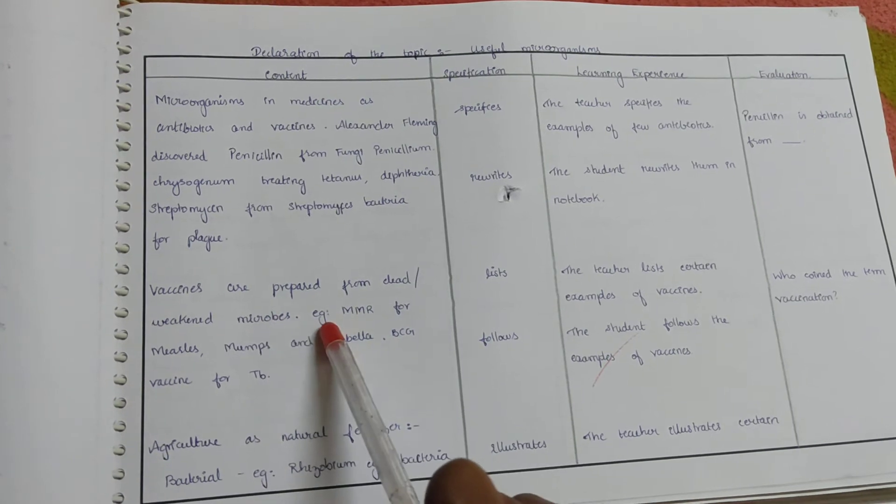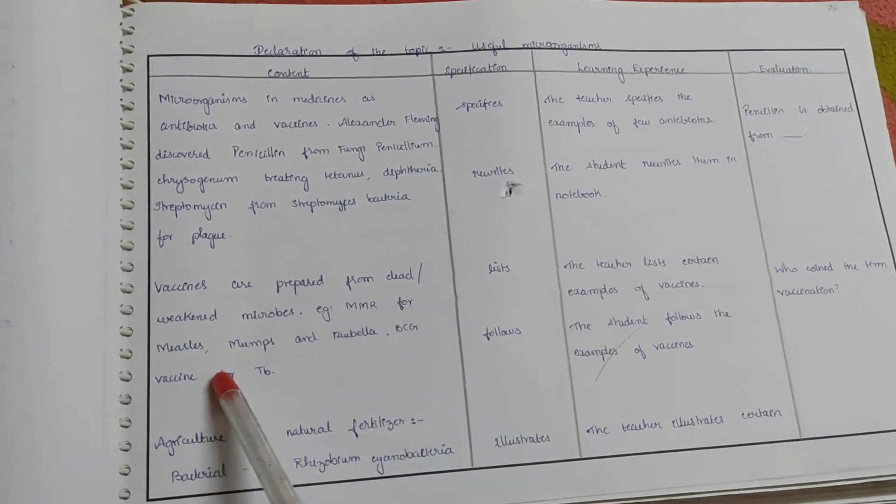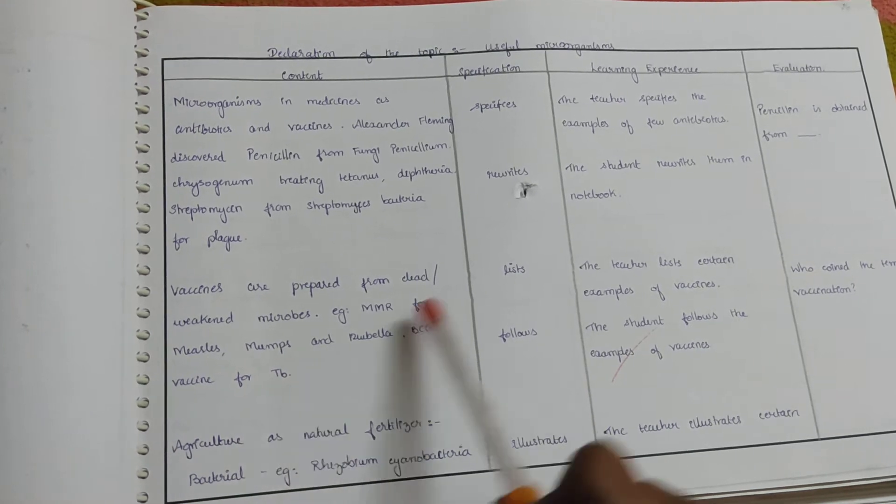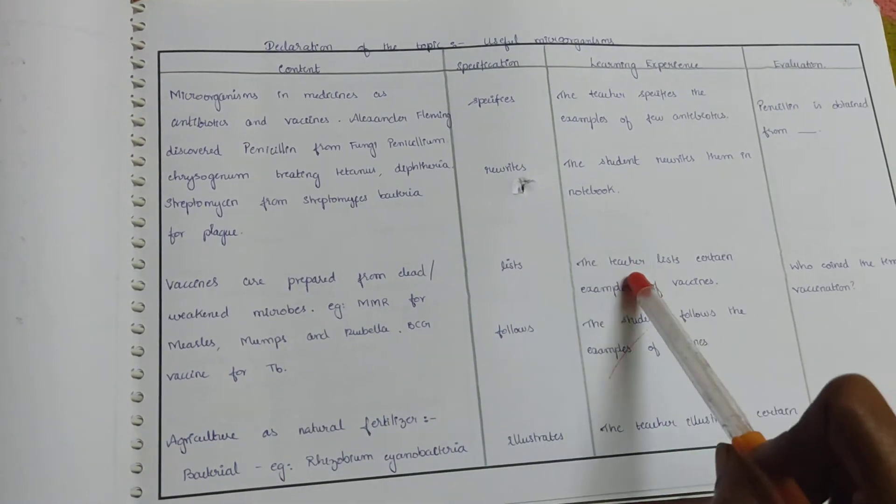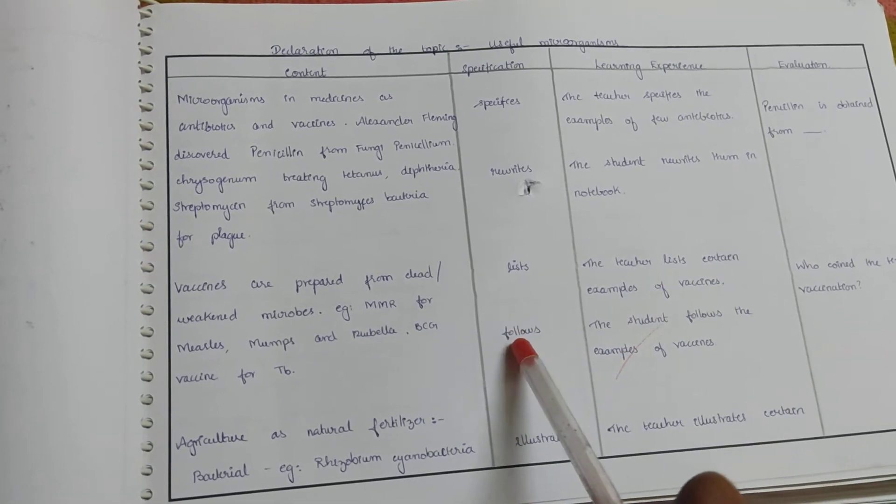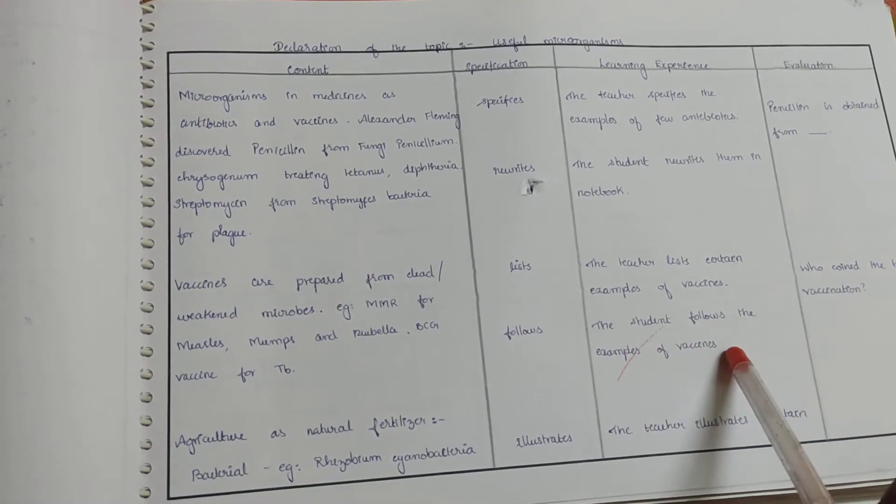Example: MMR for measles, mumps and rubella. BCG vaccine for TB. The teacher lists certain examples of vaccines. The student follows the examples of vaccines. Who coined the term vaccination?